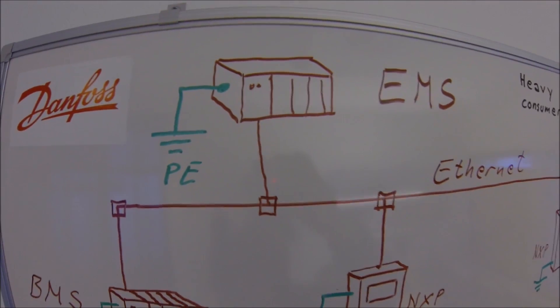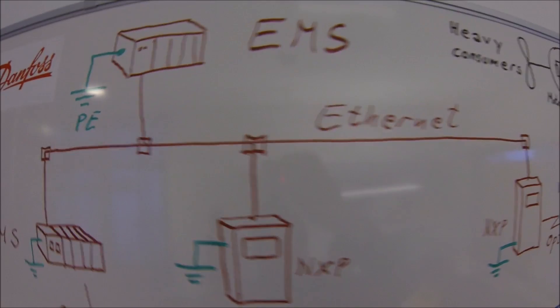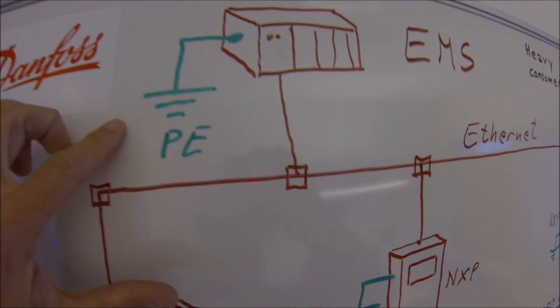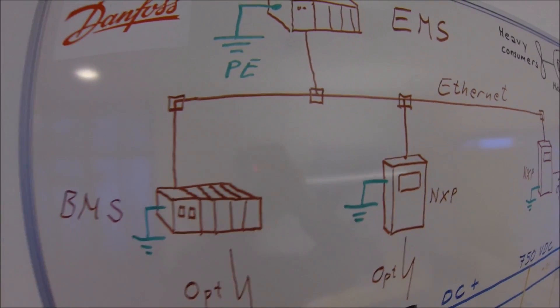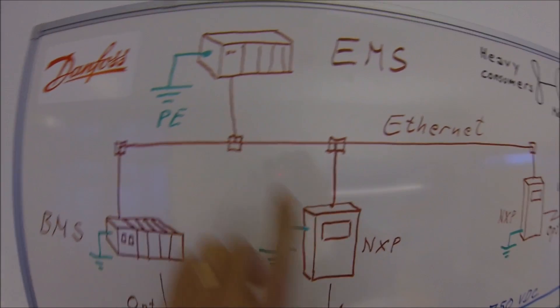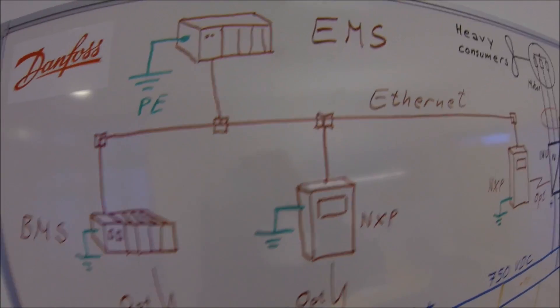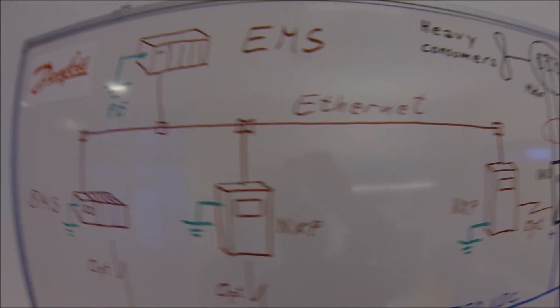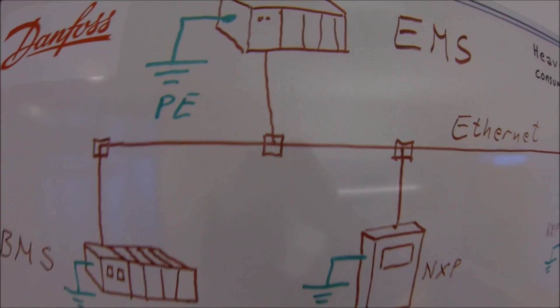These PLCs and Ethernet systems usually have a connection to the protective earth. It's common practice to have the zero voltage at control voltages and bus systems connected to protective earth.